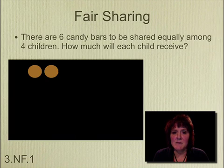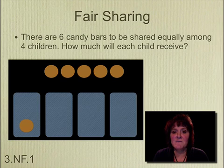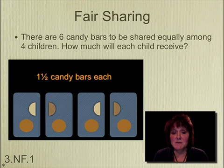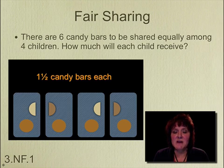The next example of a fair sharing problem is there are six candy bars shared equally among four children. Again, the children are represented and the passing out of the candy bars begin. Until there are two candy bars left, each is split in half and distributed to each of the students. Therefore, each child will receive one and a half candy bars.